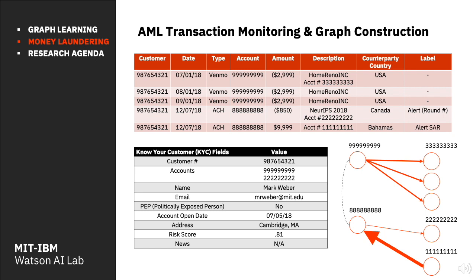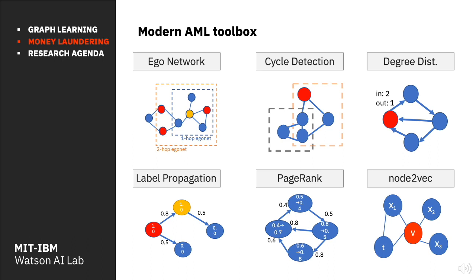Here's a quick snapshot of a transaction monitoring system paired with know-your-customer details. In terms of graph construction, each node is an account and the edges are the aggregate transactions between accounts. Each node and each edge has certain known properties, attributes, and labels. Generally in AML we're dealing with sparse labeling of flagged transactions and suspicious activity reports, making this a semi-supervised learning task.